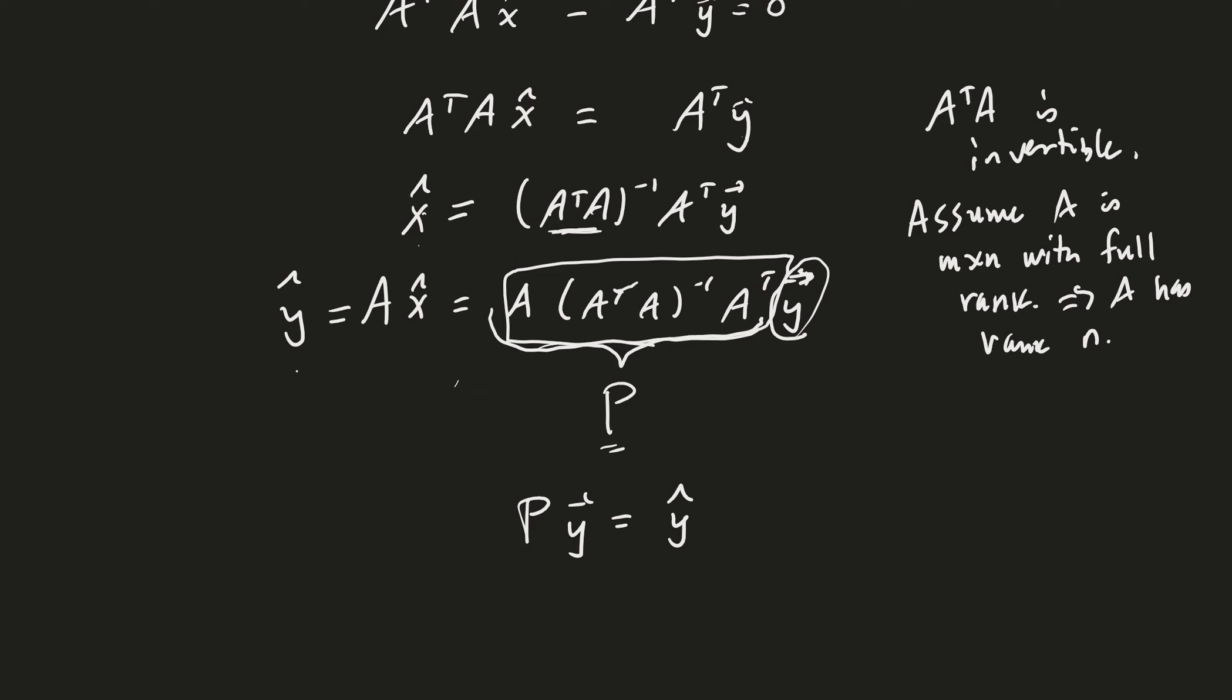So, what we're saying here is that if I take Y that's in RM and I apply P to it, I get Y hat. Which means that P projects Y into the column space of A. Good. And so, this is a nice formula because this formula works for a generic full rank matrix. Good. Full rank meaning the rank is as large as it possibly can be, allowed by the numbers M and N here.